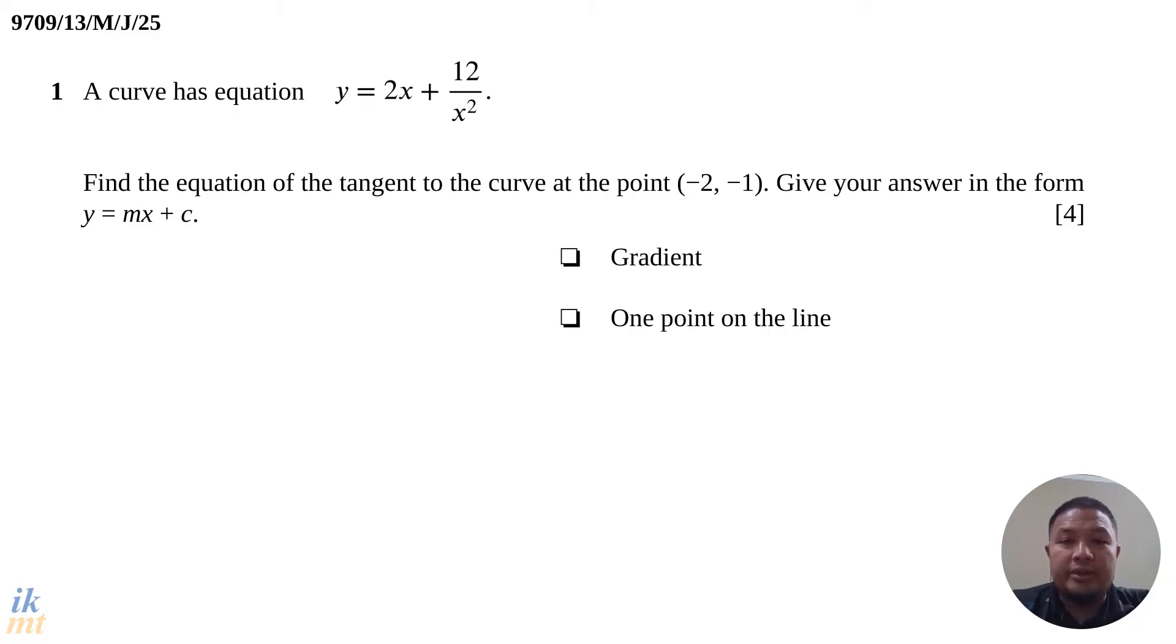Let's do our check right now. Do we have this information? Out of these two, do we have the gradient? No, we don't have the gradient yet. We don't know the gradient of this tangent to the curve. But what we do know is one point on this line, and that is the point (-2, -1). So one of these is known.